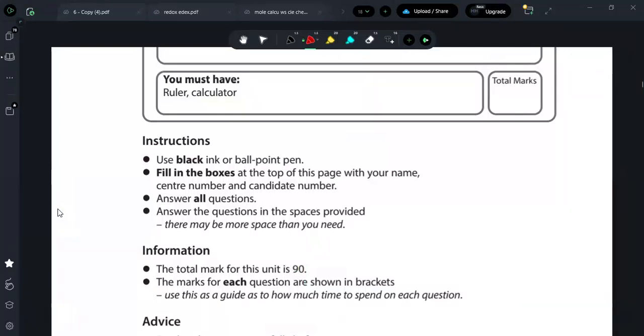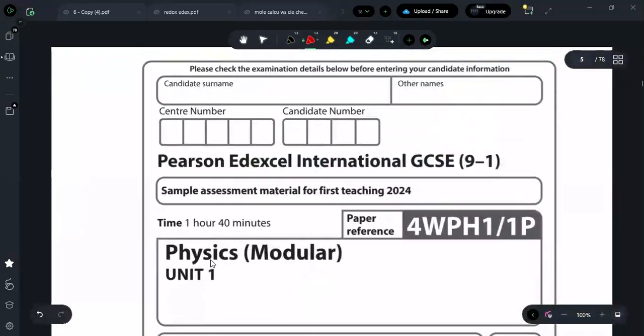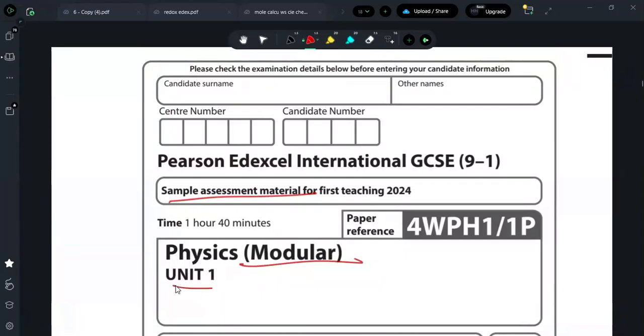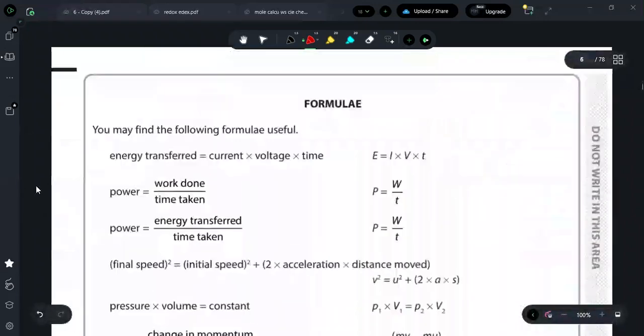So in this video, I will be working through the sample assessment paper of the modular specification for physics unit 1, and I will break down one question at a time in each video. So let's start with the questions.